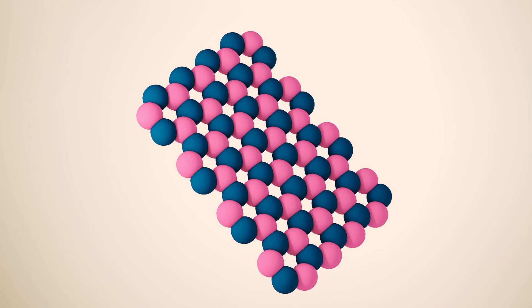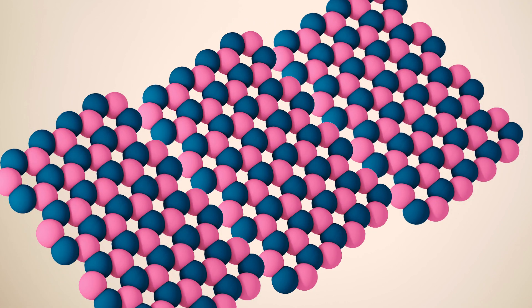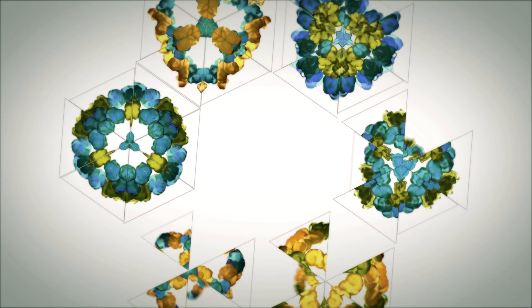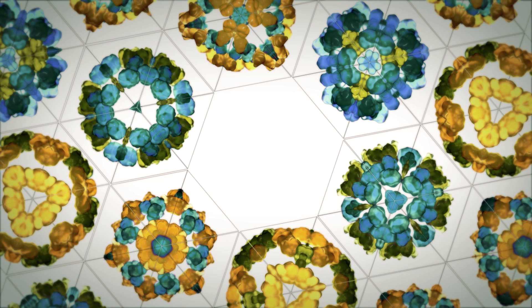Or new materials, like engineered surfaces that self-assemble, could be used in solar cells and electronic devices. You can go in a thousand different directions.